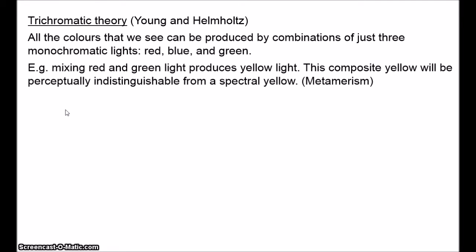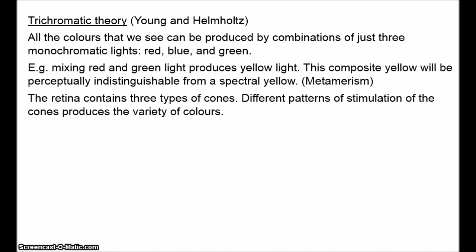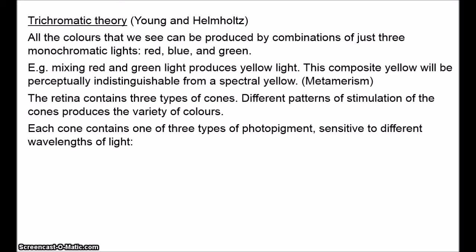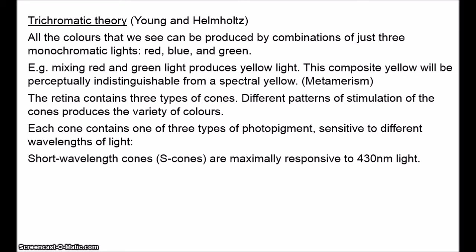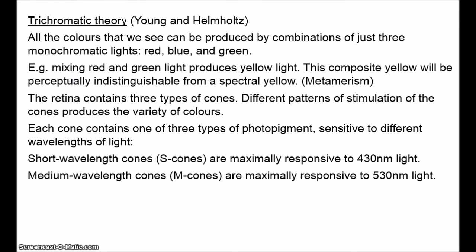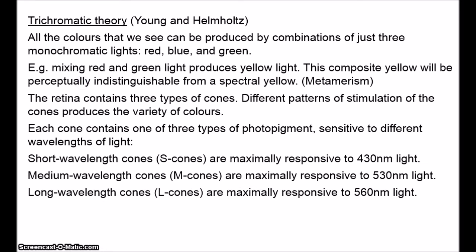On the basis that various combinations of only three types of light are sufficient to match any colour, Young and Helmholtz predicted that the retina contains three cone types. This prediction is correct. The cone photoreceptors each contain one of three different types of photopigment, each sensitive to different wavelengths. There are short wavelength cones (S-cones), maximally responsive to about 430 nm light; medium wavelength cones (M-cones), maximally responsive to about 530 nm; and long wavelength cones (L-cones), maximally responsive to about 560 nm.